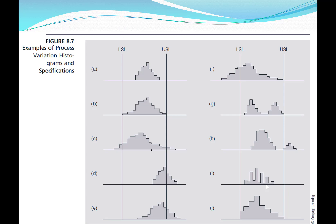This view graph shows graphically what we mean by that. Here we have lower and upper spec limits. In part A, the process variation is well within the spec limits, and so this process is capable of meeting specifications.